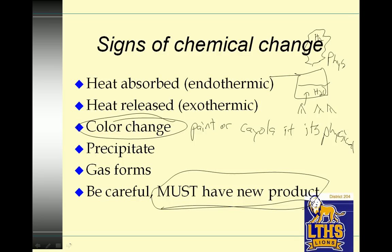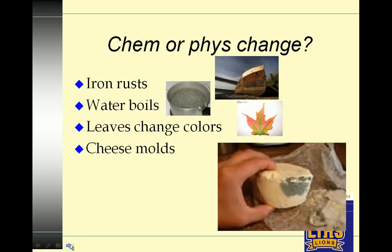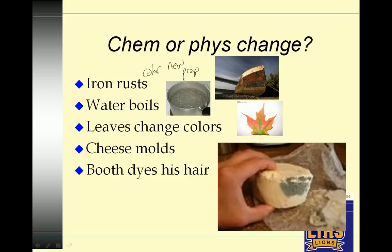So chemical or physical change — iron rust: we had a color change and new properties. Iron is hard and silver, and rust is crumbly and red — this is a chemical change. Water boils is a physical change: start is water, end is water.